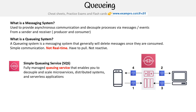For AWS, it's called Simple Queuing Service, or SQS. It's a fully managed queuing service that enables you to decouple and scale microservices, distributed systems, and serverless applications.